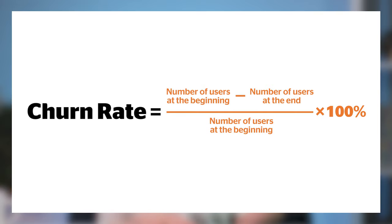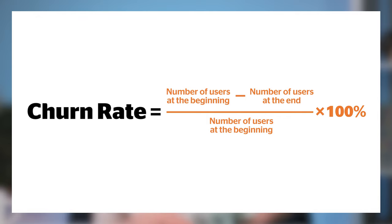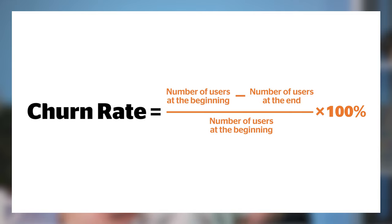You definitely want to calculate the churn rate for your business. Here's the formula: take the number of users at the beginning of the period, subtract the users at the end of the period, then divide that number by the users at the beginning of the period. That's how you get the churn rate.